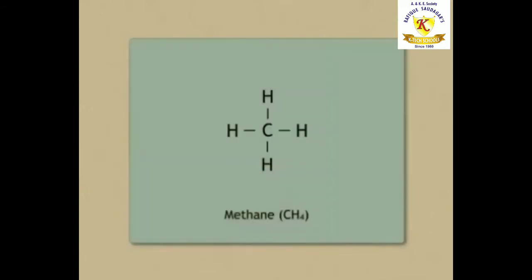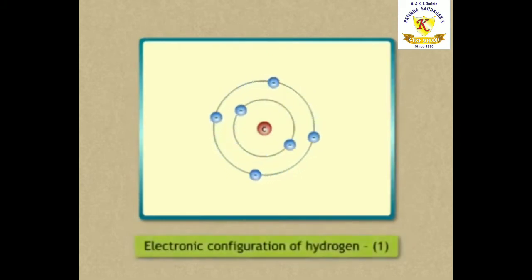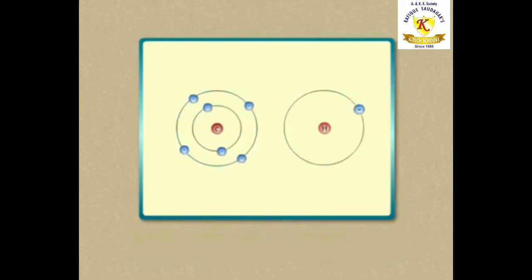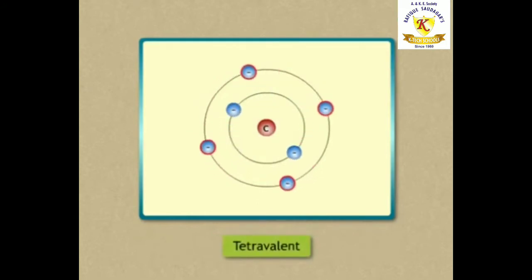Methane is an organic compound with molecular formula CH4. In this compound carbon is bonded to 4 hydrogen atoms. The electronic configuration of carbon is 2,4. Carbon has 4 electrons in its outermost orbit and hence it is tetravalent.